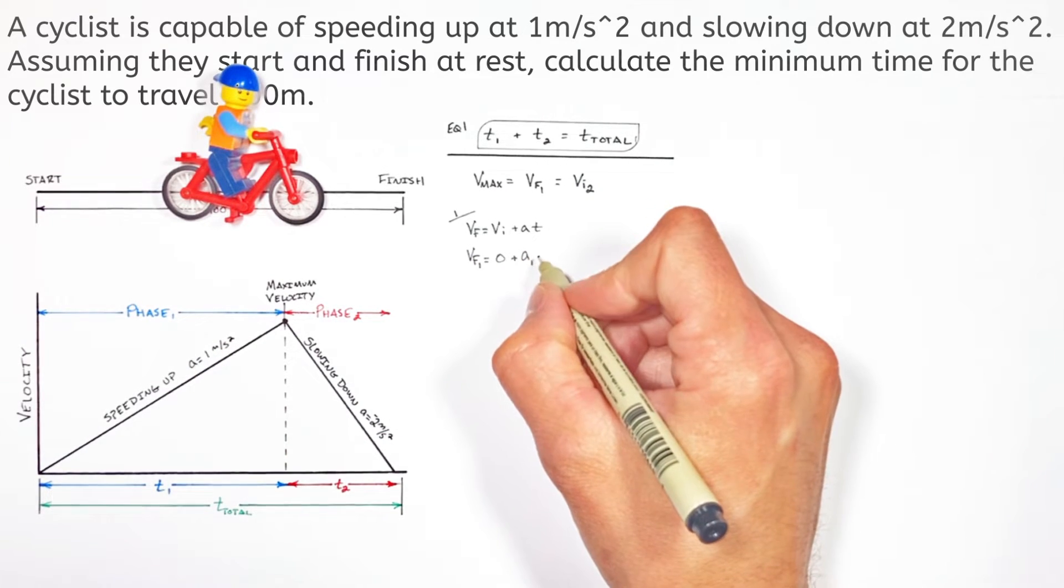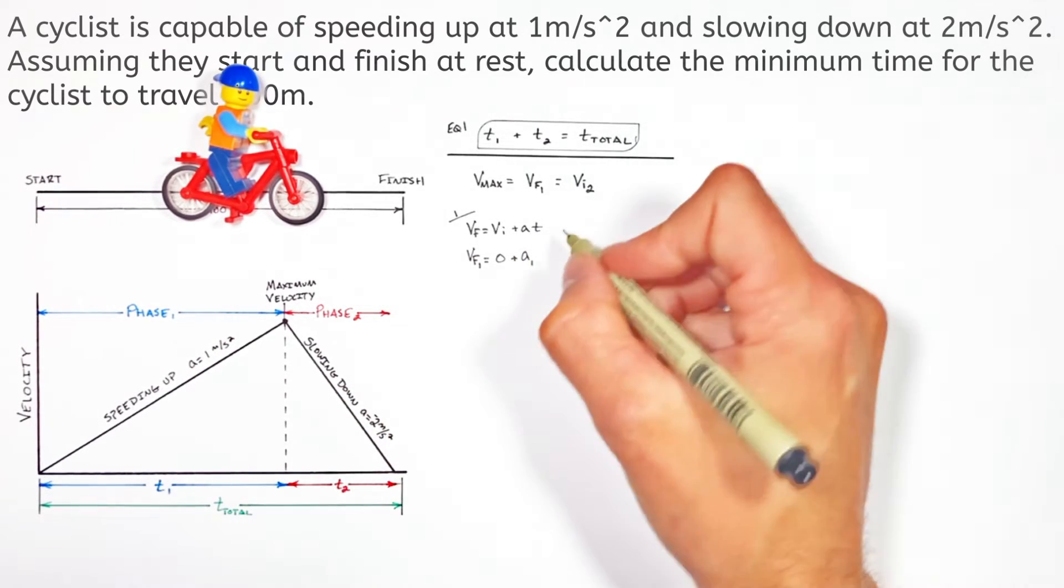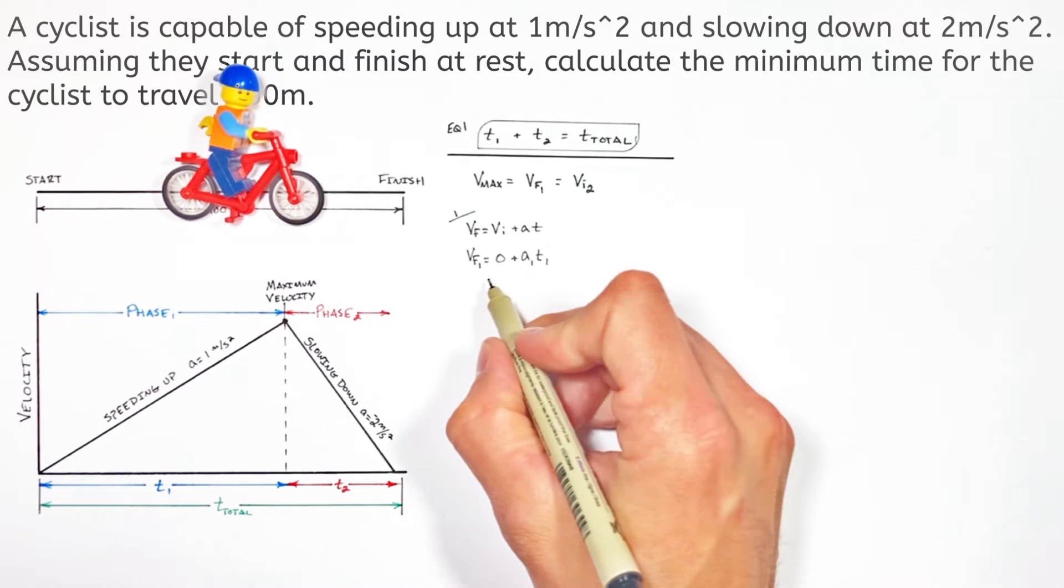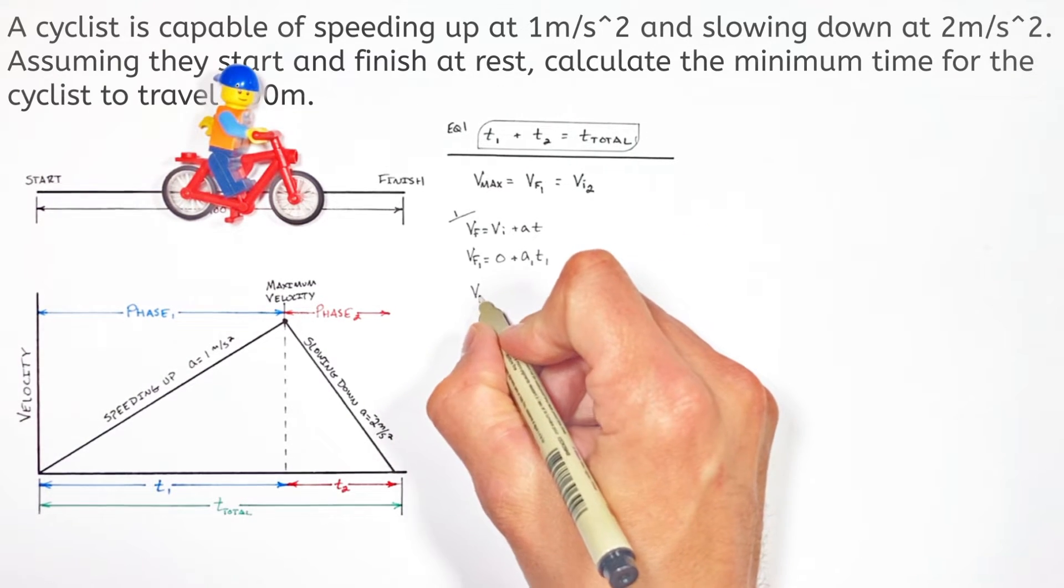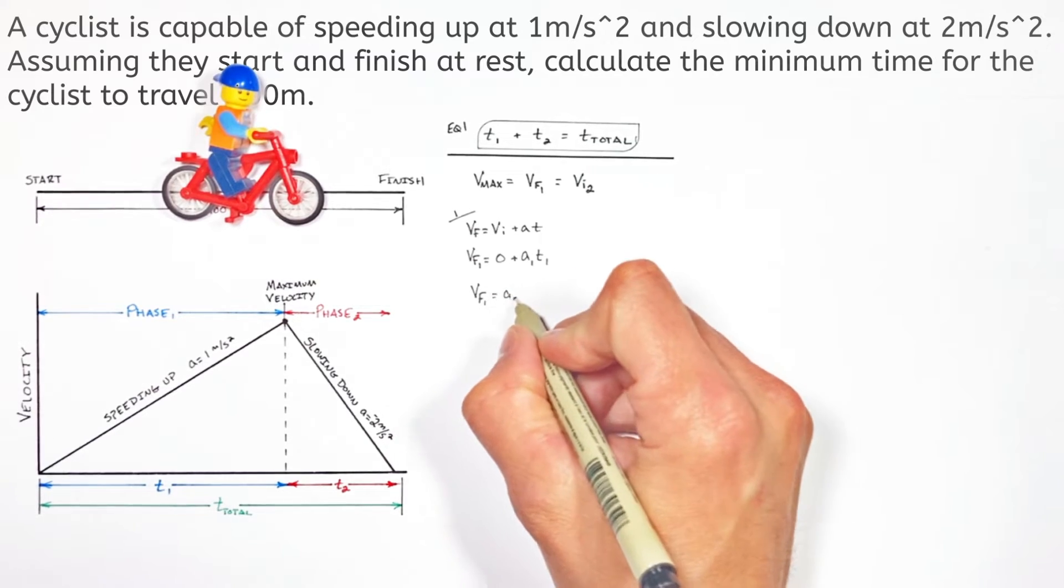we're going to get VF1 is equal to 0, that's the initial velocity, plus A1 which is 1, but I'm going to leave it as a variable, times T1 which we don't know. Leaving us with an expression that relates the final velocity to the acceleration in time over that first phase.